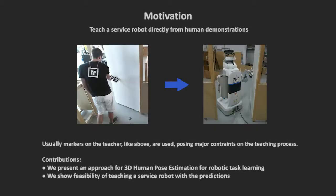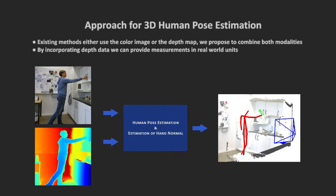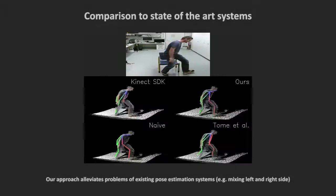We present a novel approach for human pose estimation in 3D. With this approach we teach a robot new tasks directly from demonstrations without using markers on the teacher. Our approach uses both the color image and the depth map in order to predict human pose in real-world units. In comparison to state-of-the-art approaches and the naïve baseline approach, we show improved results.